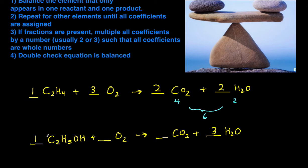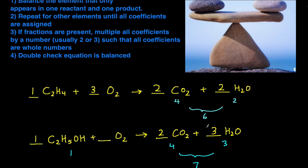Next, let's balance the number of carbons. Here I have two carbons, and right here I have one carbon, so I'm going to put a coefficient of two here. Now let's balance the oxygens. There's a total of four oxygens from the CO2 — two times two — and then three oxygens from the water — three times one — giving a total of seven oxygens on the right hand side. One reactant contributes one oxygen, so O2 would have to contribute six oxygens, meaning this coefficient needs to be three.